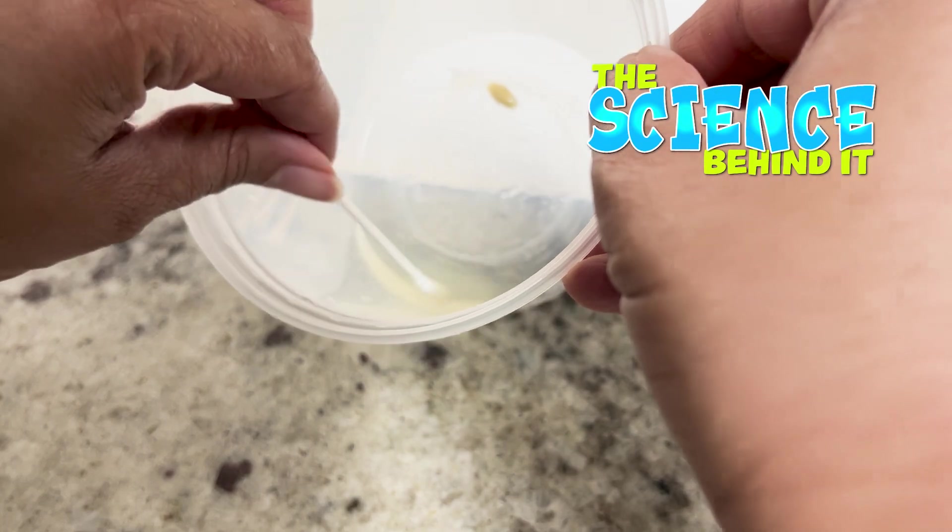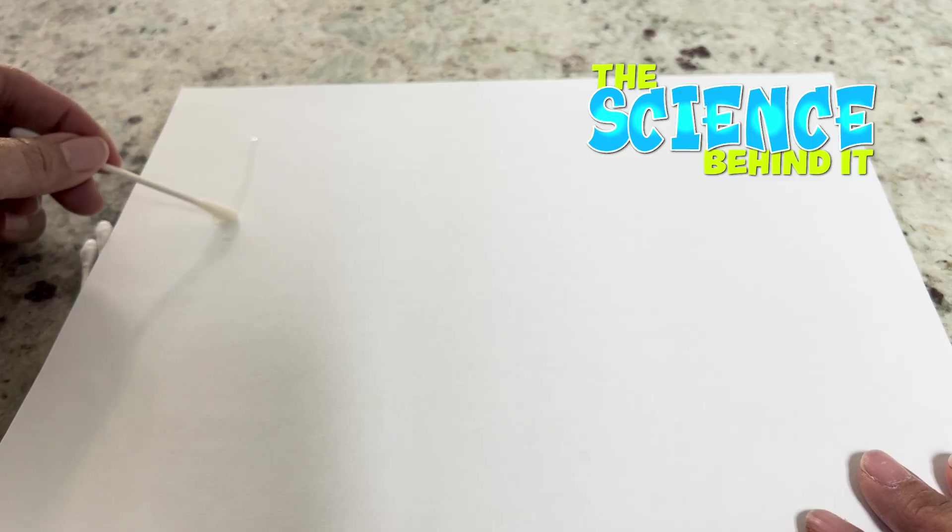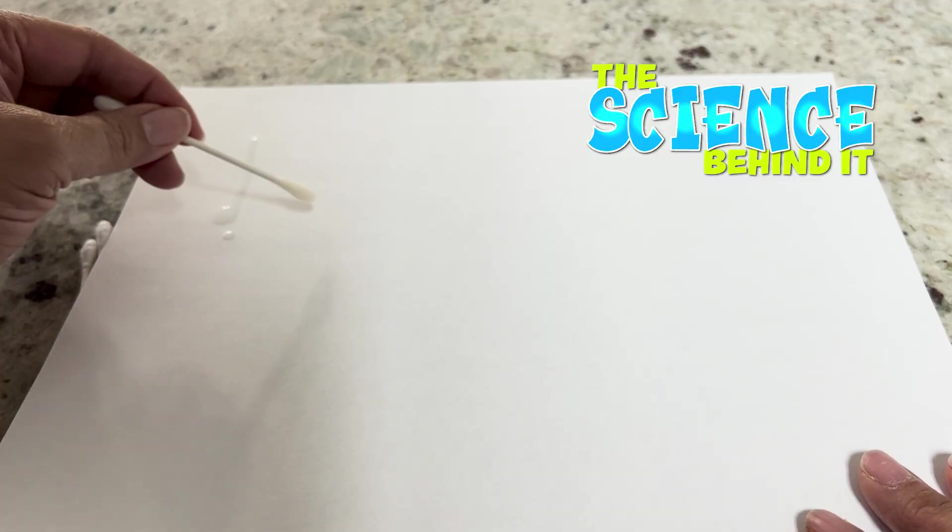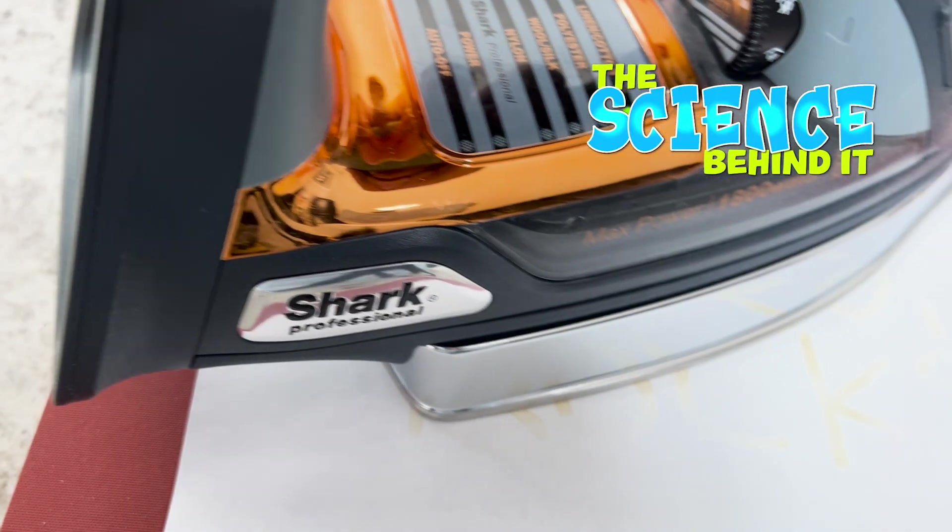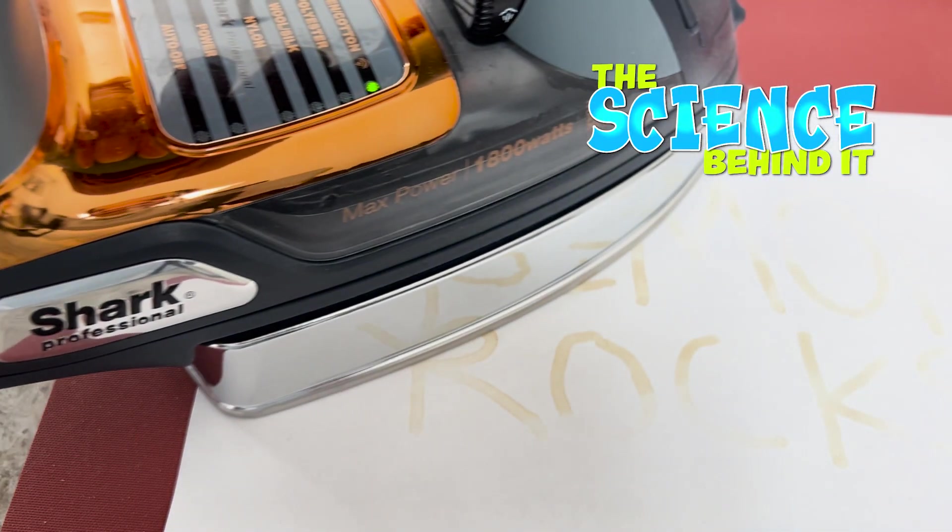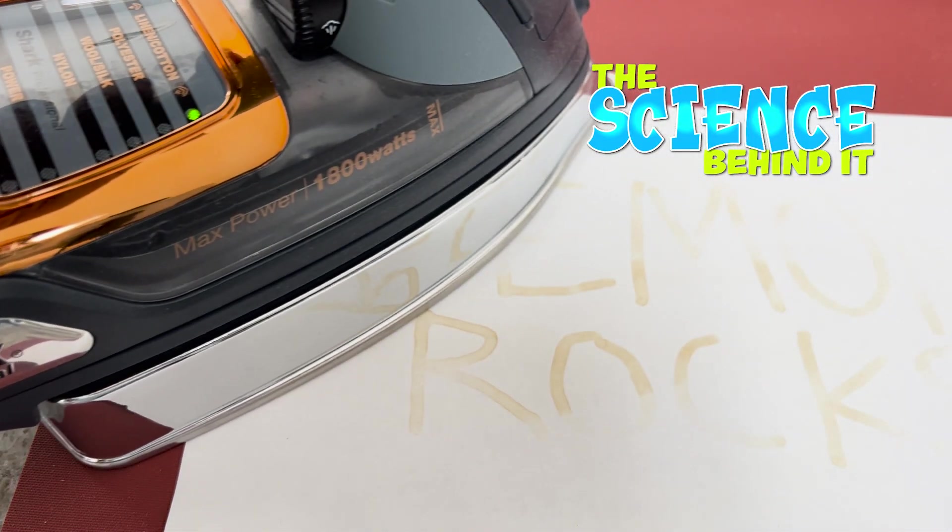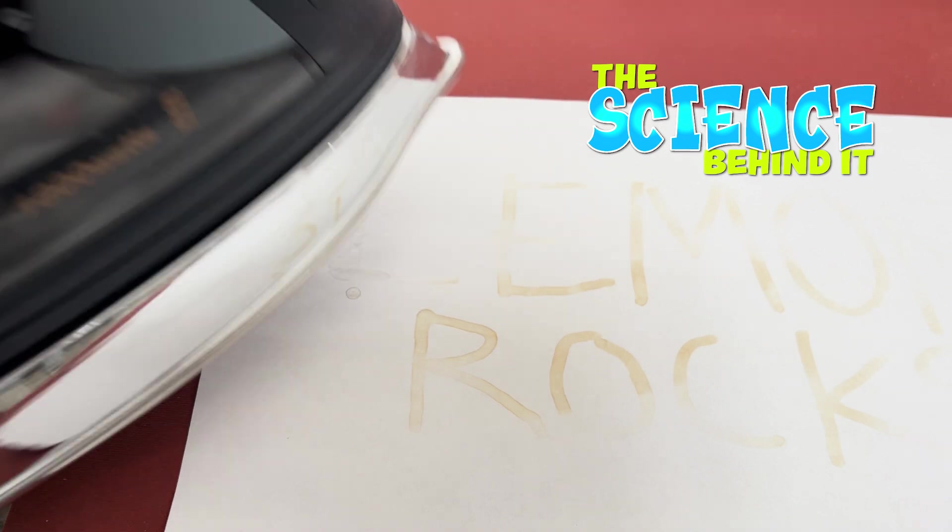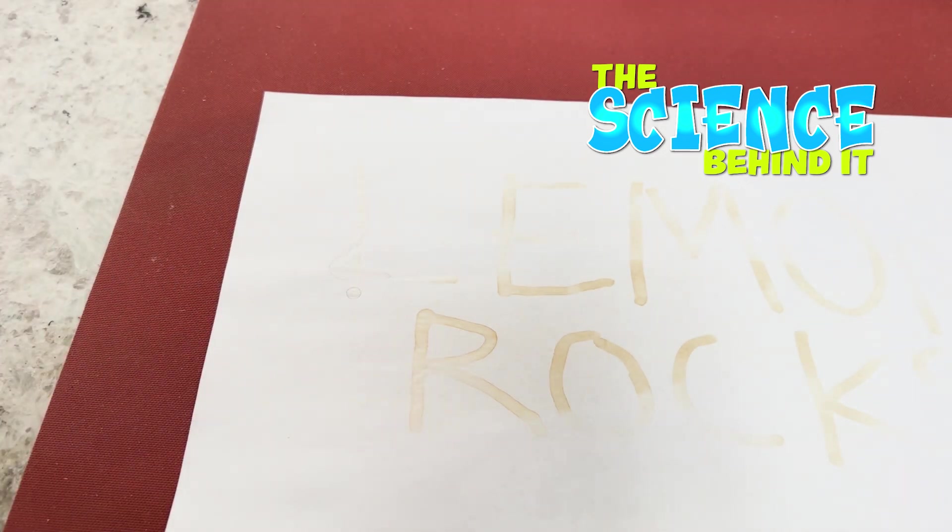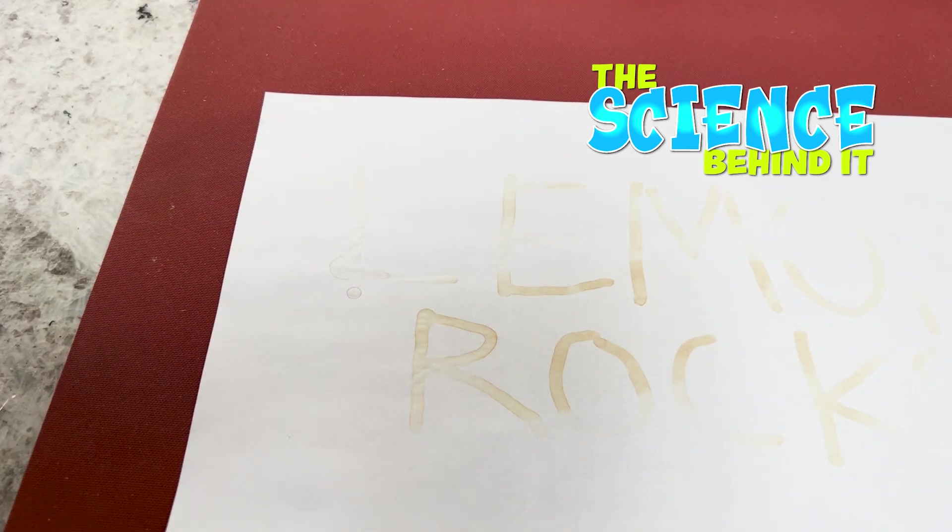Well, I'll tell you how it works. Lemon juice contains cellulose. When the juice is added to paper, it lowers the paper's burning point. Here, we applied heat to our paper and saw that the area with lemon juice burned faster than the area that did not have lemon juice on it. The yellowish color of the paper revealed my message.